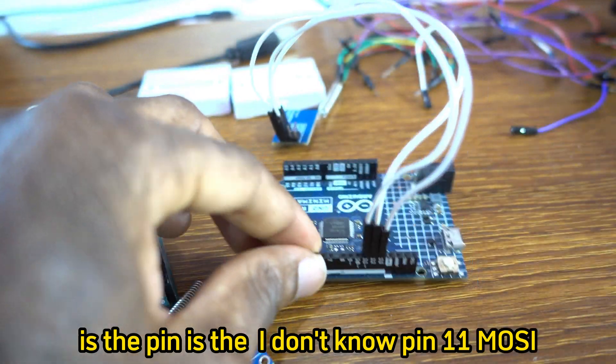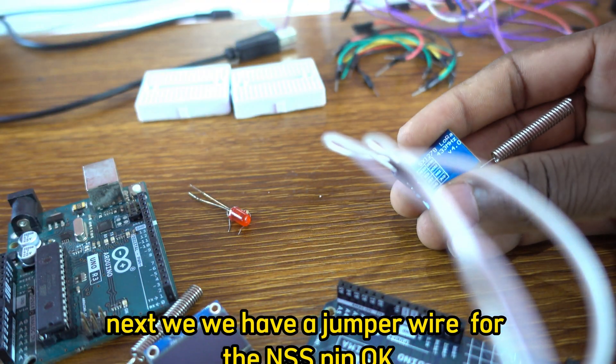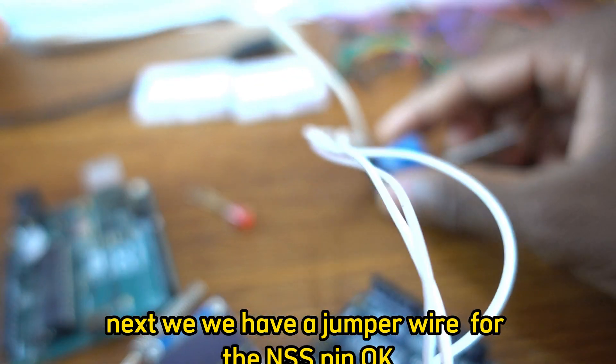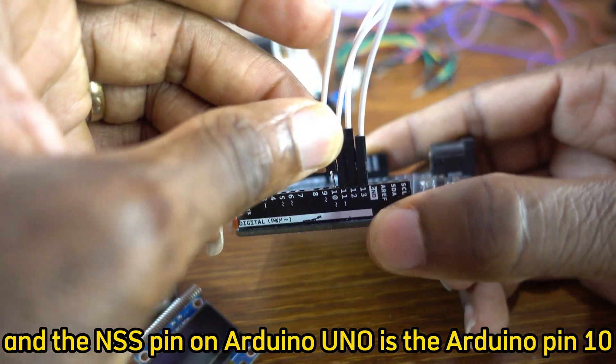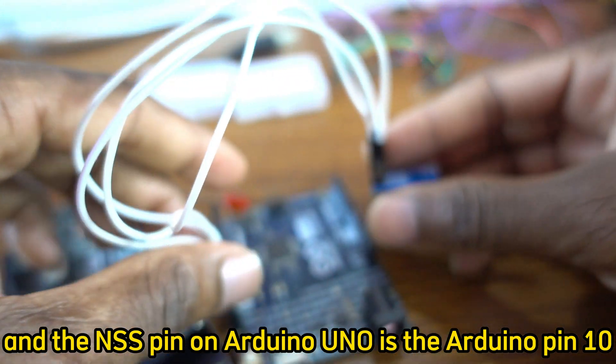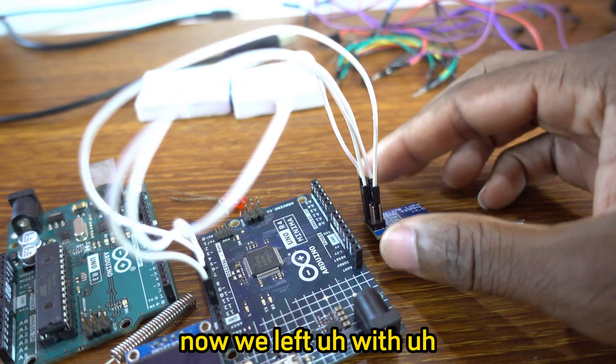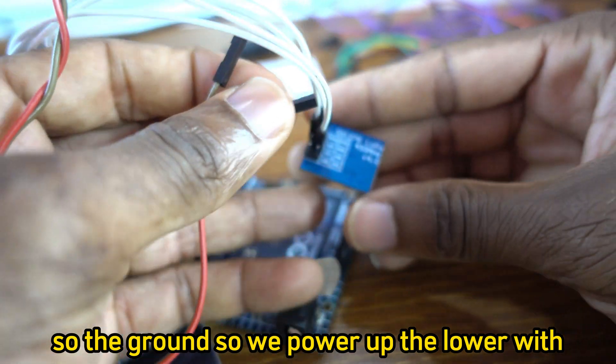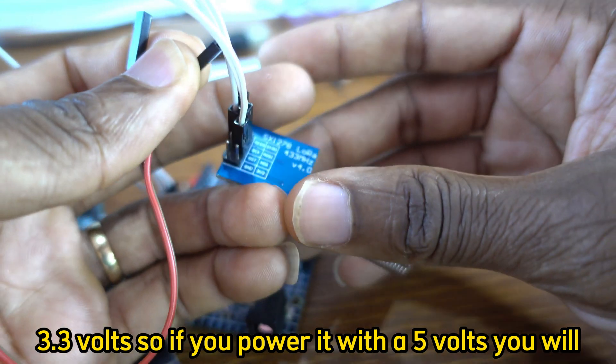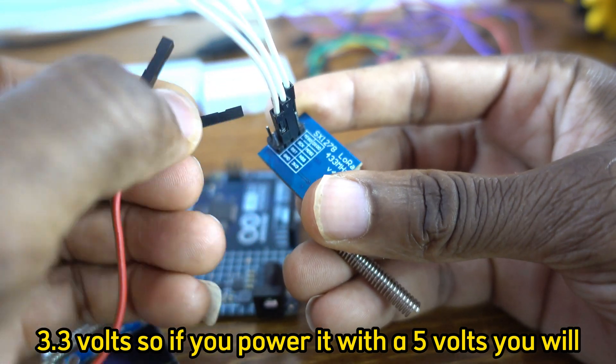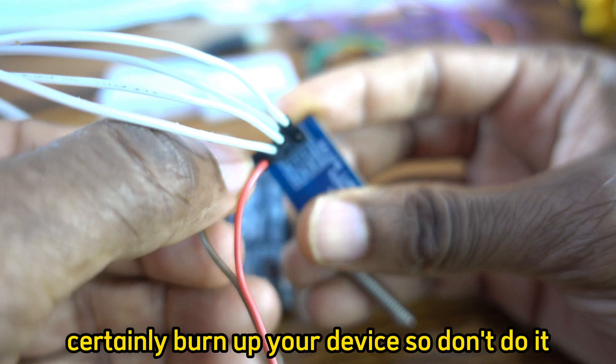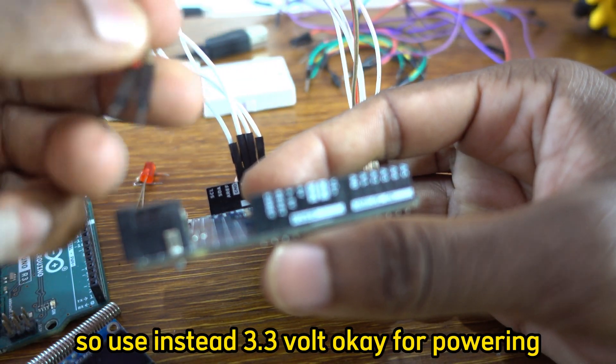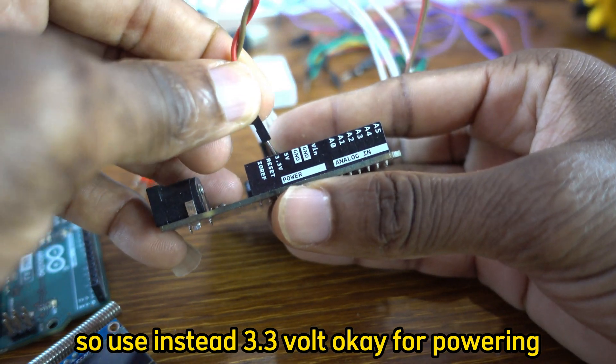Next we have a jumper wire for the NSS pin, and the NSS pin on Arduino Uno is Arduino pin 10. Now we left with power supply. So the ground - we power up the LoRa with 3.3 volts. So if you power it with 5 volts you will certainly burn up your device, so don't do it.